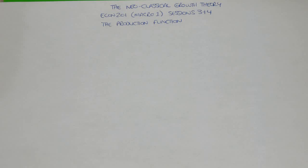Today I'm starting to talk about the neoclassical growth theory. In particular, this comes from Economics 201, Macro 1, which is the first part of the course, and Sessions 3 and 4. The elements of the neoclassical growth model that I'm going to be talking about today is the production function, and future videos will also look at the other elements of neoclassical growth theory.